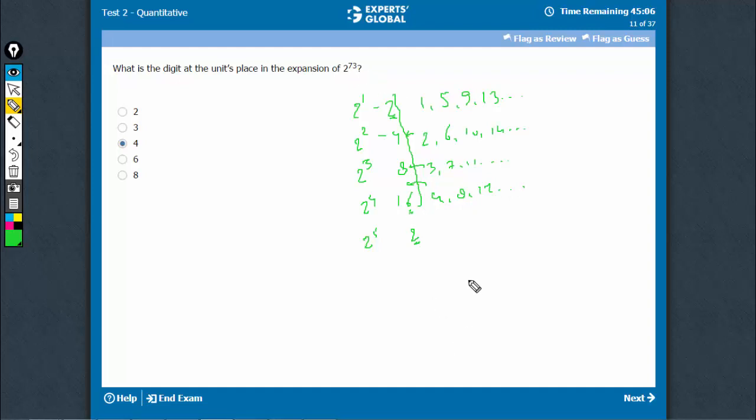73 lies in what? Divide the power with the cyclicity, which is 4 in this case, because it's repeating after every 4. Find the remainder.